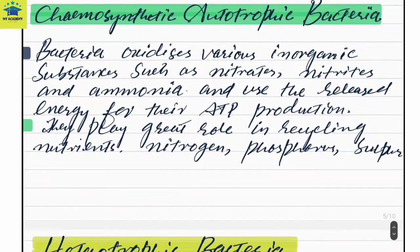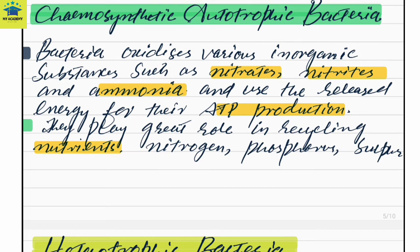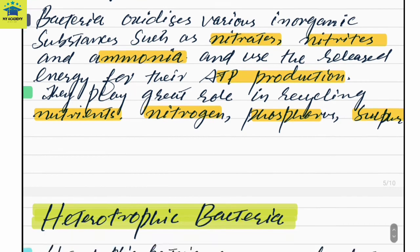Chemosynthetic autotrophic bacteria oxidize various inorganic substances like nitrates, nitrites, and ammonia to release energy for ATP production. They play a great role in recycling nutrients — participating in the nitrogen cycle, phosphorus cycle, and sulfur cycle.